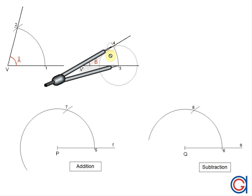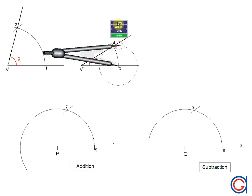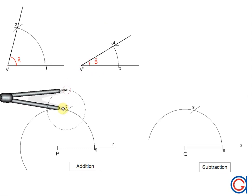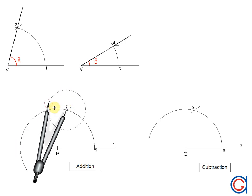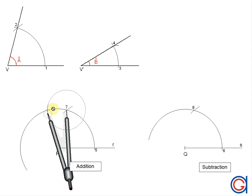To continue, setting our compass to the radius 3,4 from angle B, we are going to transport this length to the previously drawn arc on ray R, setting our compass on point 7 and scribing an arc to the left. For addition we always scribe the arc to the left, and for subtraction we will scribe the arc to the right. Here, setting our point on 7, we scribe the arc to the left until it cuts the previously drawn arc at a new point which we will call 9.